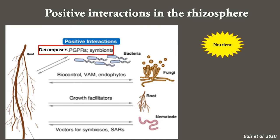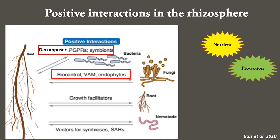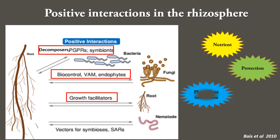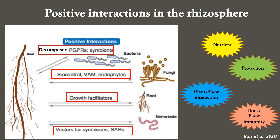There is an exchange of nutrients between the plant and bacteria. The fungal community functions as biocontrol agents, mycorrhiza, or endophytes. Fungi provide protection against other fungal pathogens and the plant provides habitat and nutrients. Similarly, roots also release chemicals for interaction with kins and neighboring plants. Interaction with certain nematodes can induce systemic acquired resistance that boosts plant immunity.